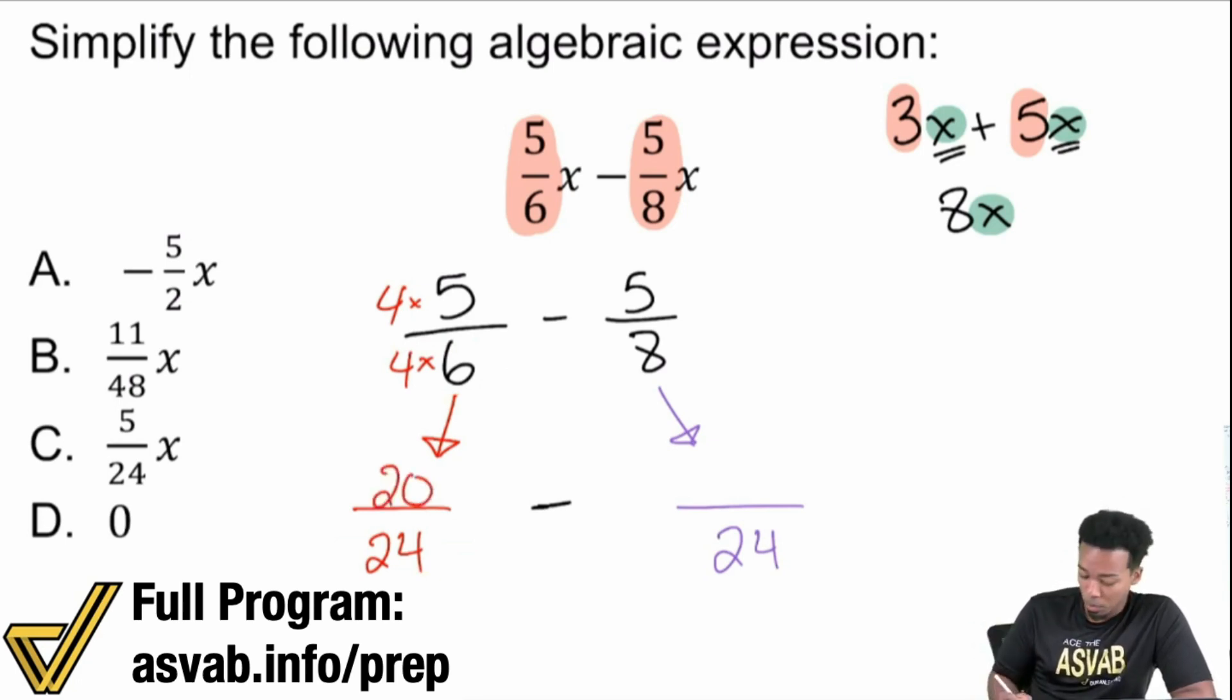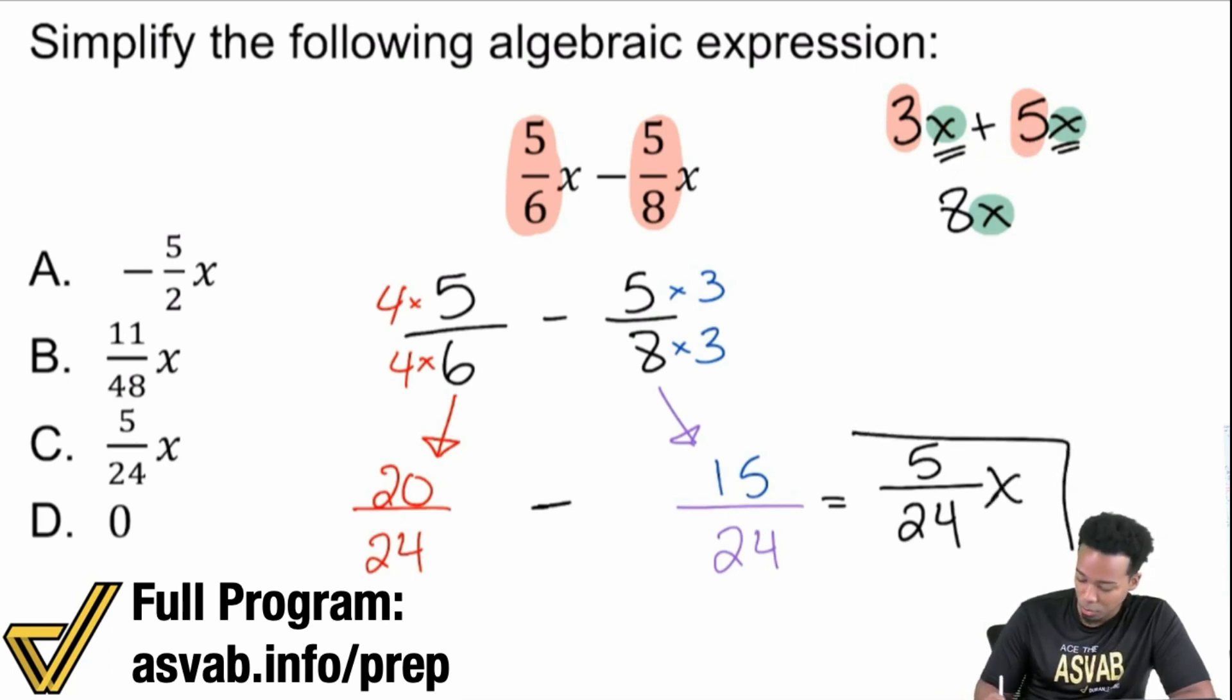Then up next, we ask ourselves a similar question. How do I go from eight to 24? Well, eight times three is 24. And you do the same thing up top. So five times three will give us 15. And so we essentially have 20 over 24 minus 15 over 24. And there we go. We can subtract them now and we'll get five out of 24. And just like we said earlier, we'll just perform the operation and then bring the X back, bring the variable back. And so it's five over 24 X. And that's why C is the correct answer.